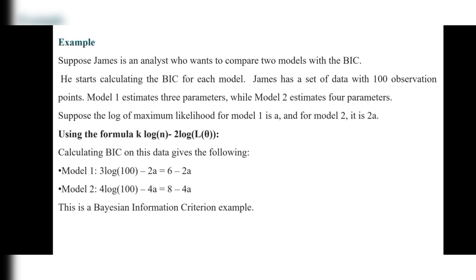Let's look at an example. Suppose James is an analyst who wants to compare two models using BIC. From the two best models, we have to select the one best model. James has a dataset with 100 observation points. Model one estimates three parameters while model two estimates four parameters. The log of the maximum likelihood for model one is 'a' and for model two it is '2a'.